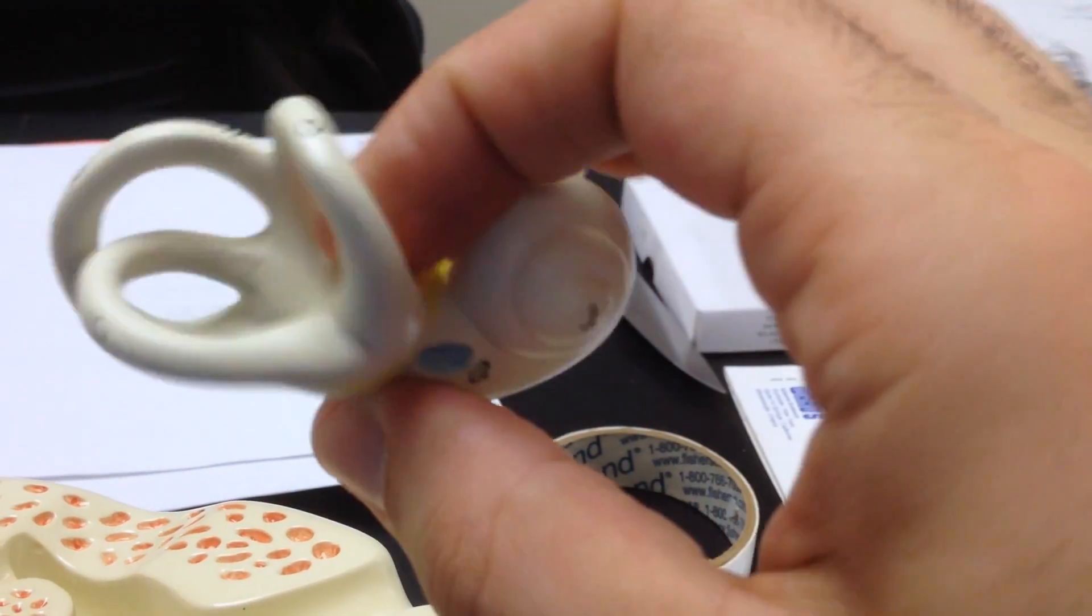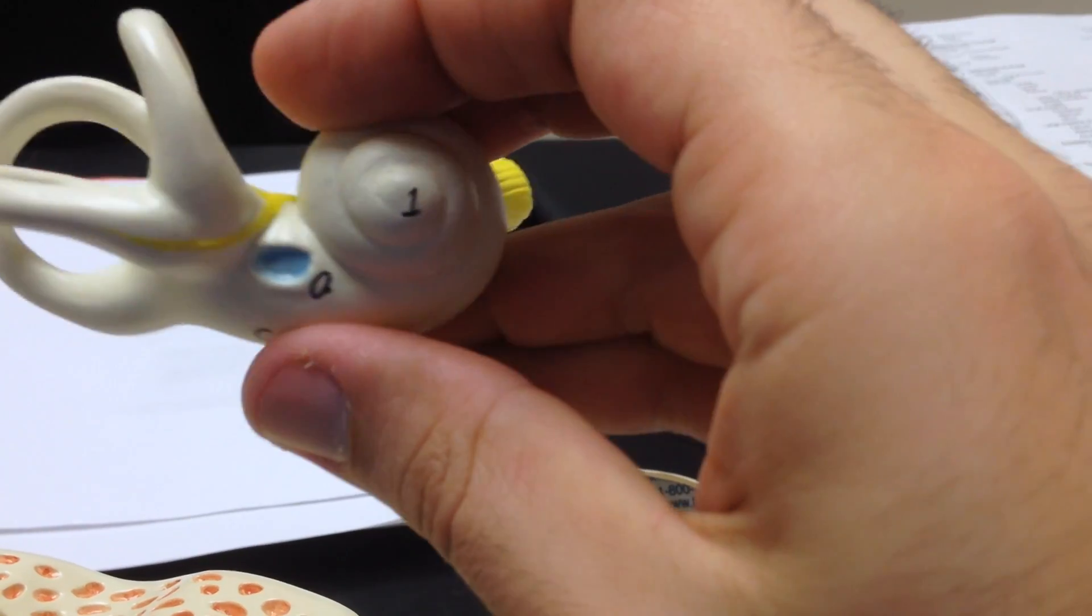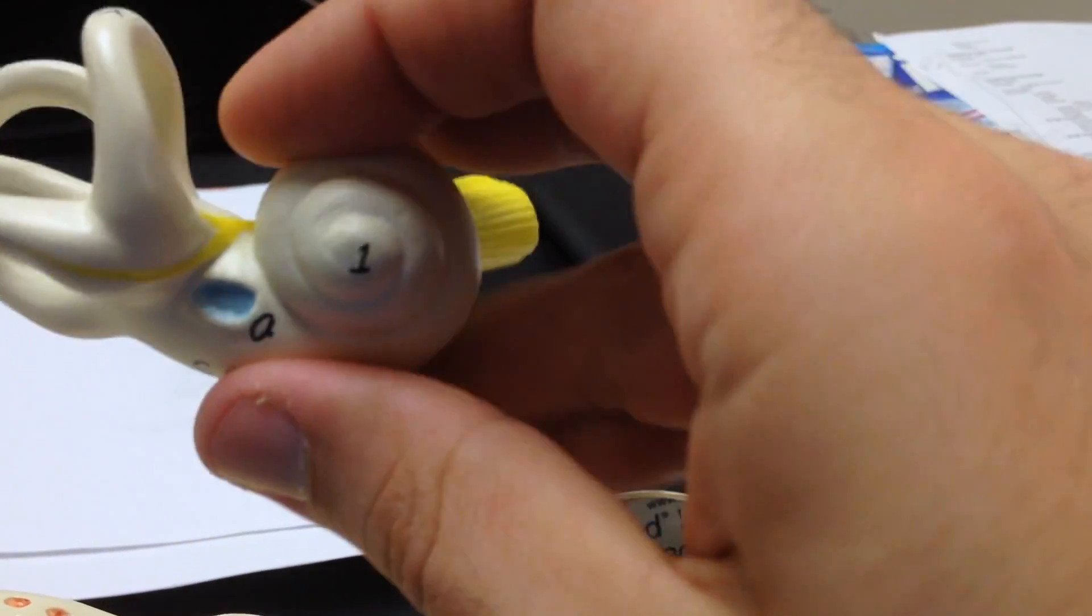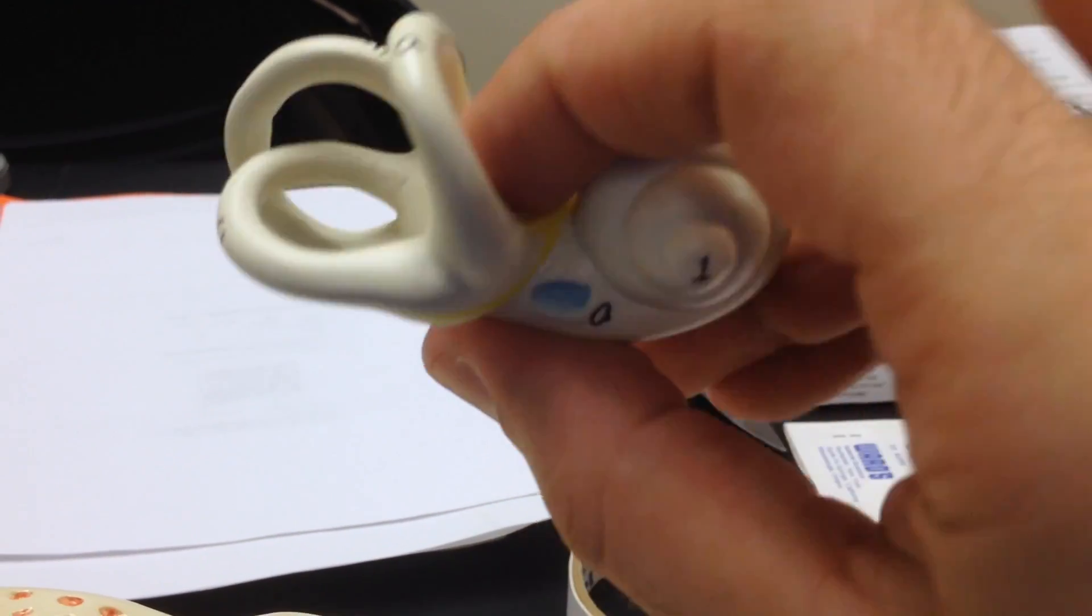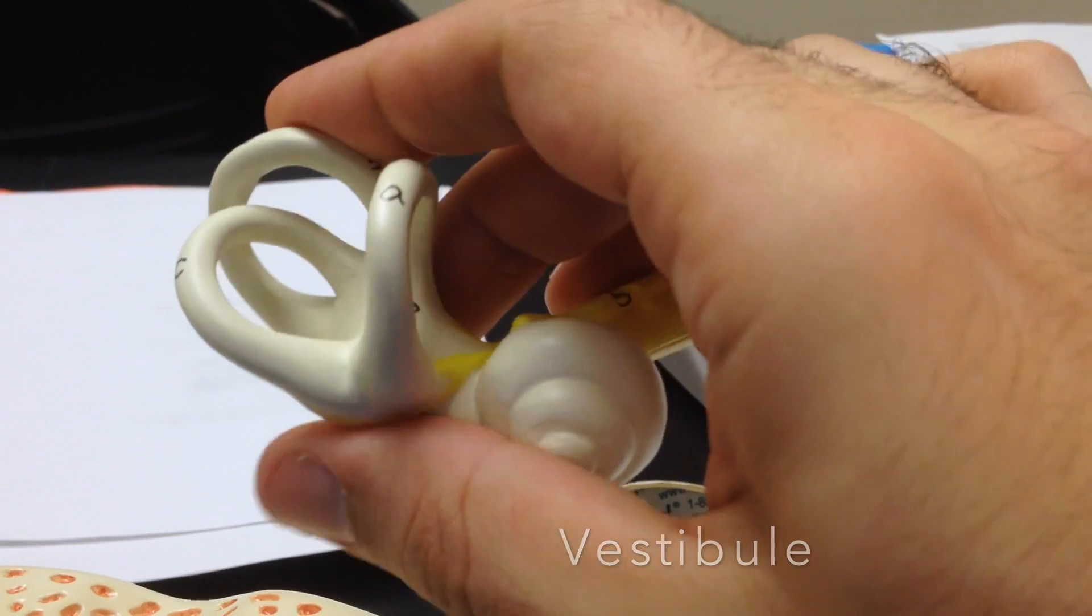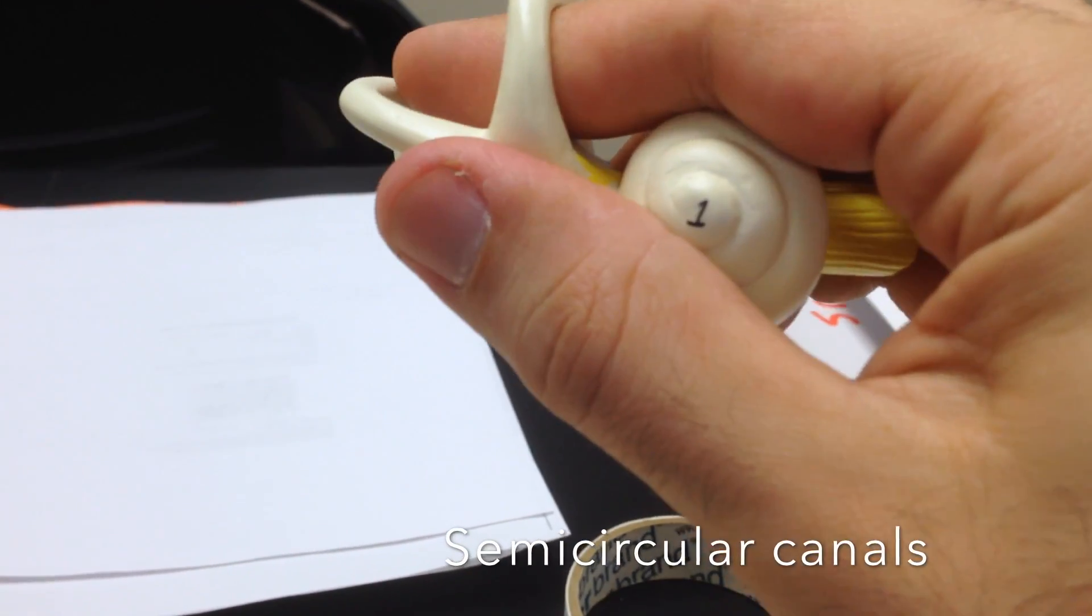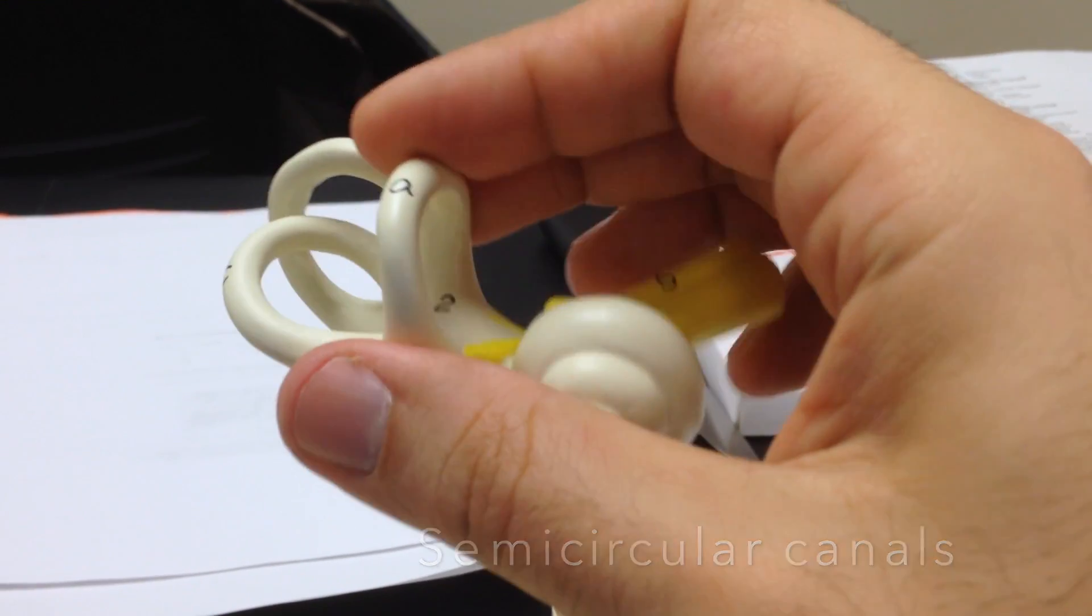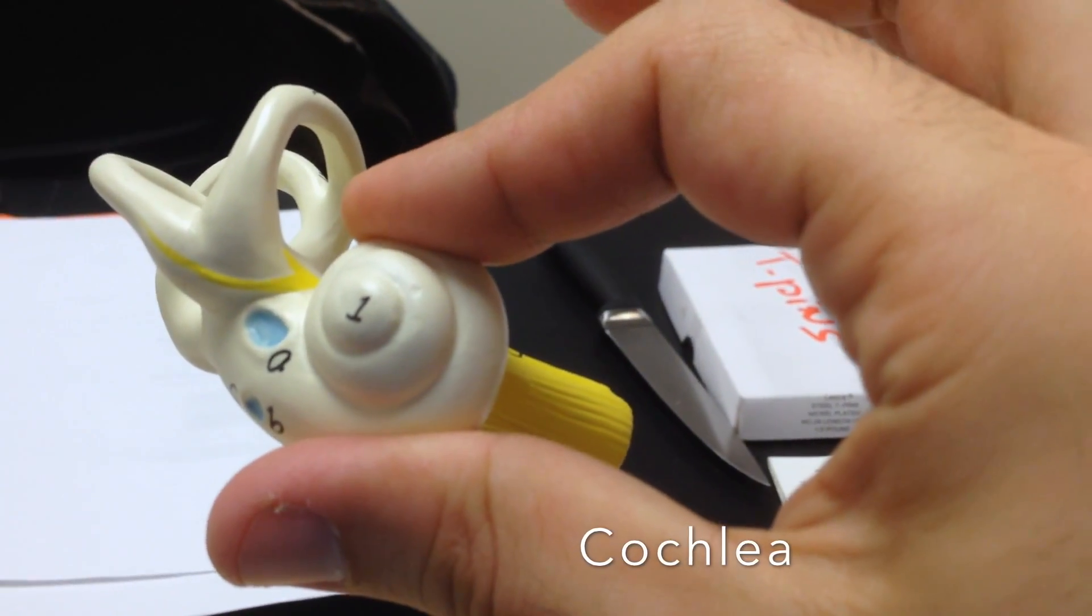And then what I'm holding here, the stem, this stem that I'm holding here, this snail-like structure, these ring-like structures. So this stem, labeled as 2 here, is called vestibule. That's what I'm holding. What I'm holding now with my fingers, I can put my finger through them. Those are the semicircular canals. And this snail-shaped organ is the cochlea.